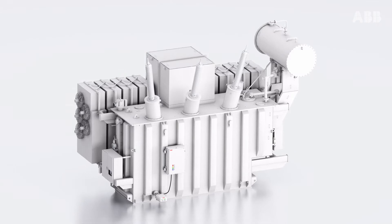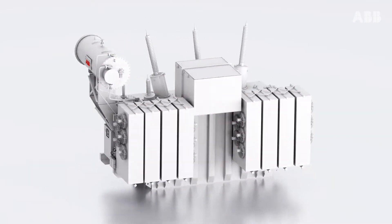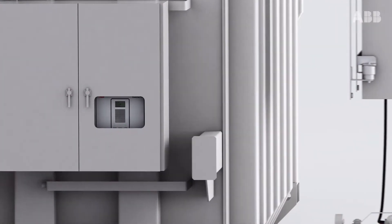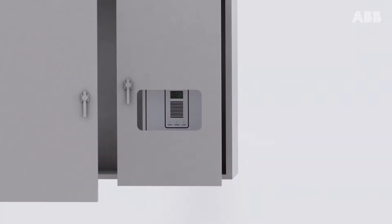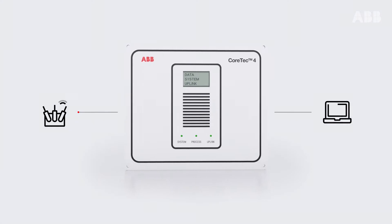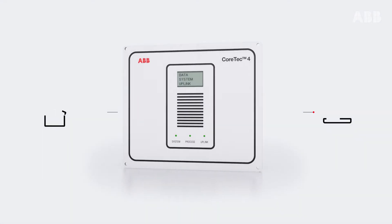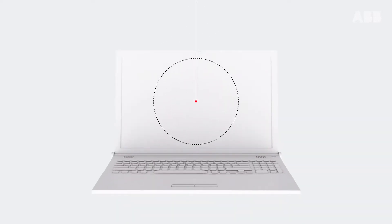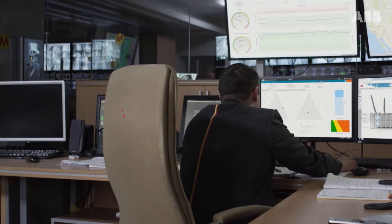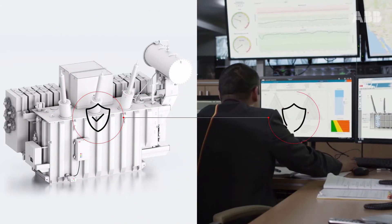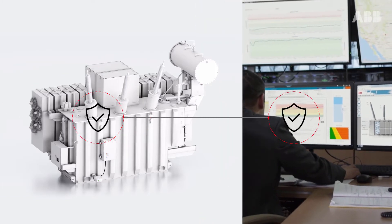The new ABB Ability Power Transformer is the world's first standard digitally enabled power transformer. At its heart is the CoreTec4, a scalable transformer monitoring platform. CoreTec4 is designed to monitor, model and control your transformer asset. It can be connected securely via different mediums into your plant controls. ABB has implemented rigorous cyber security standards, supported by industry norms to enable end-to-end resiliency.